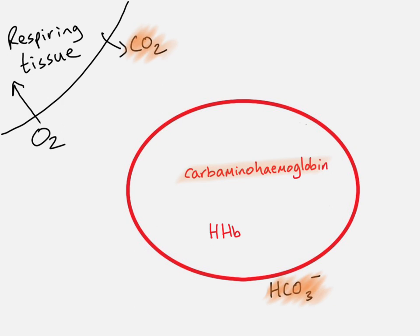There are three different ways carbon dioxide is transported. Only about 5% is transported dissolved in solution in the blood plasma. About 10% is transported as carbaminohemoglobin. And about 85% is transported as hydrogen carbonate ions in the blood plasma.